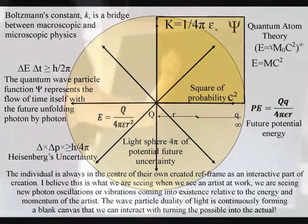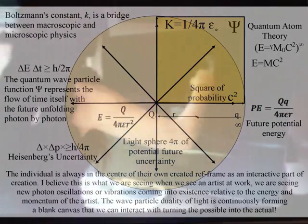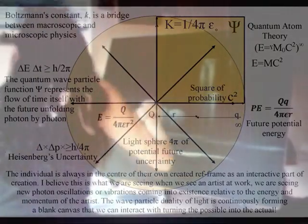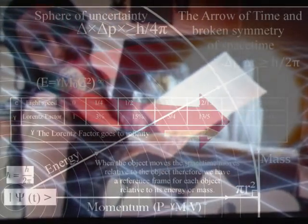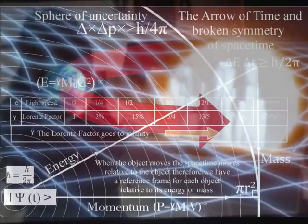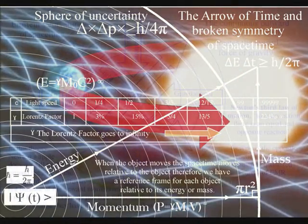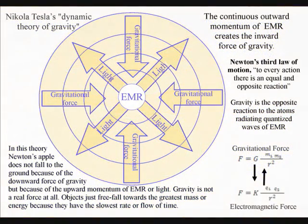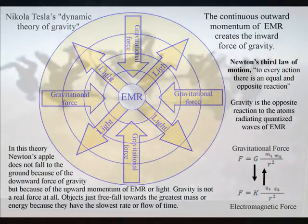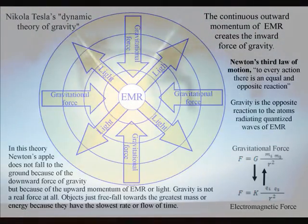By reducing consciousness to the level of electrical activity that is aware of its own electrical potential, we can place the individual observer in the center of his or her own reference frame as an active participant in the dynamics of our universe. Life will create its own ripples in the fabric of space-time as part of one universal process — true for the smallest creature as it is for the largest planet. Therefore Newton's universal law of gravity is part of this process. In this theory, Newton's apple does not fall to the ground because of the downward force of gravity, but because of the upward momentum of electromagnetic radiation, or light.